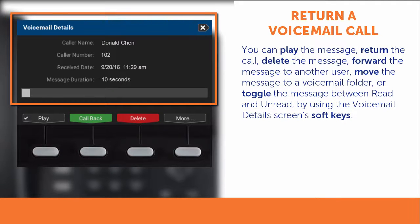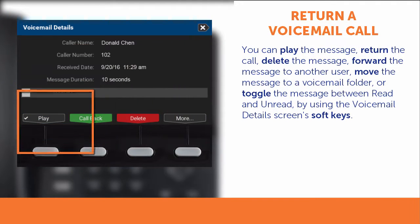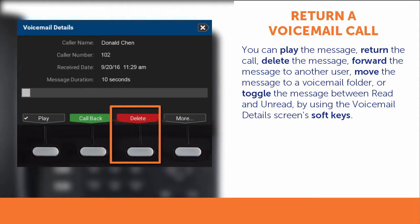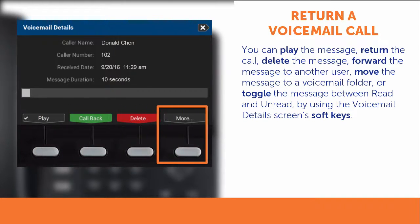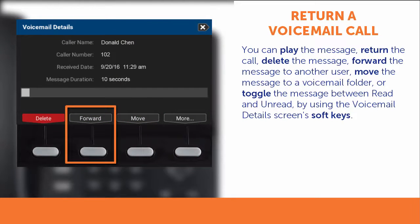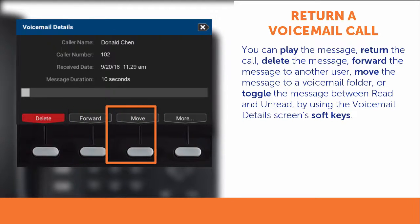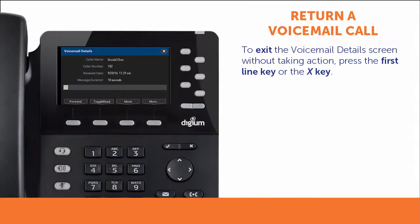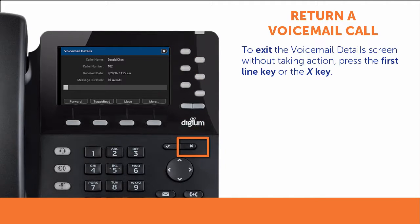Using the soft keys on the Voicemail Details screen, you can play the message, call the caller back, delete the message, or take other action, such as forwarding the message to another user, moving the message to a voicemail folder, or toggling the message to read or unread. To exit the Voicemail Details screen without taking action, press the first-line key to the right of the X button in the top-right corner of the menu screen, or the X key.